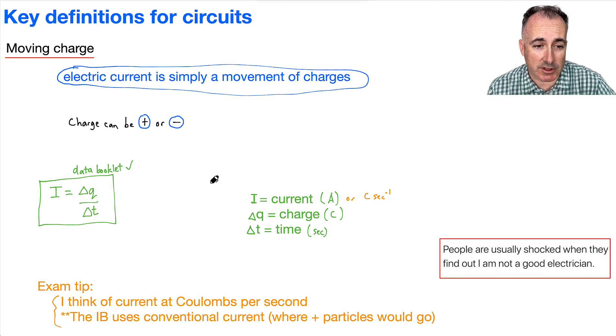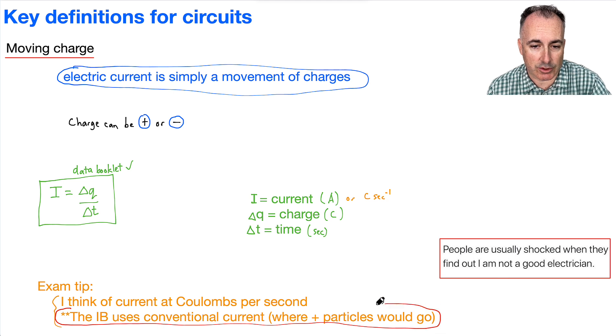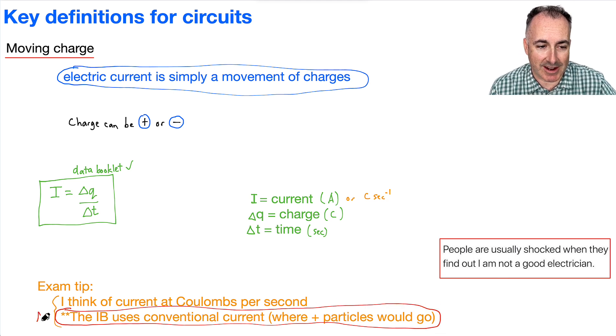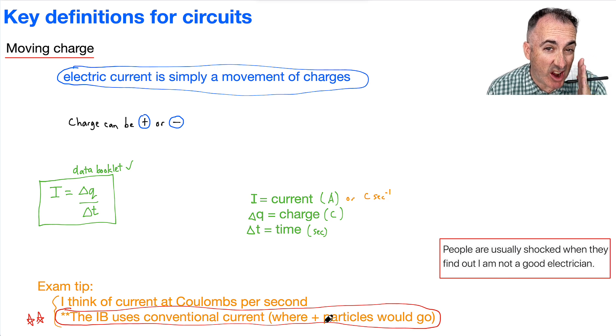And a really important piece that's going to be super important when we consider circuits is this: the IB uses conventional current. So when they say the direction of the current, we use what's called the conventional current, which is where positive particles would go. This is a bit silly, because we've known for more than 100 years that it's actually electrons that move around. It's the negative particles. But for some reason, in the IB, they decided to use the one we know for sure is wrong. So when we're going to be talking about current, just remember, we're considering where positive particles would go.